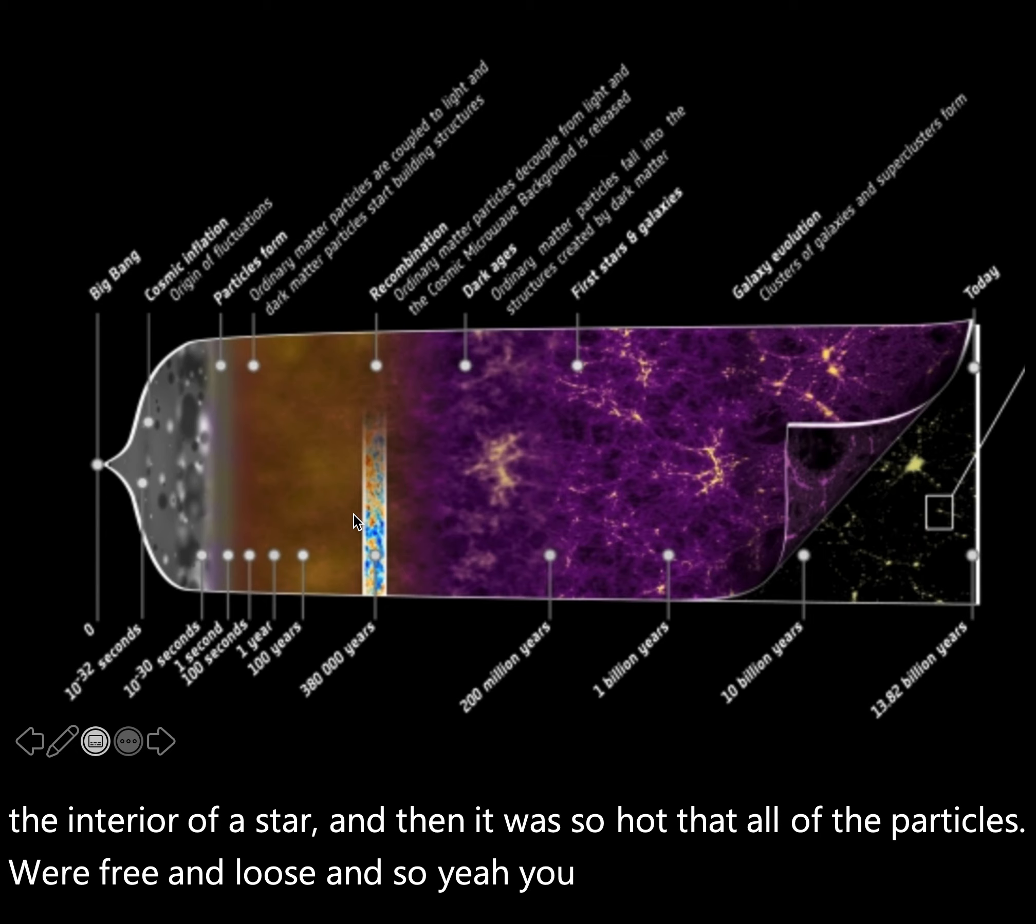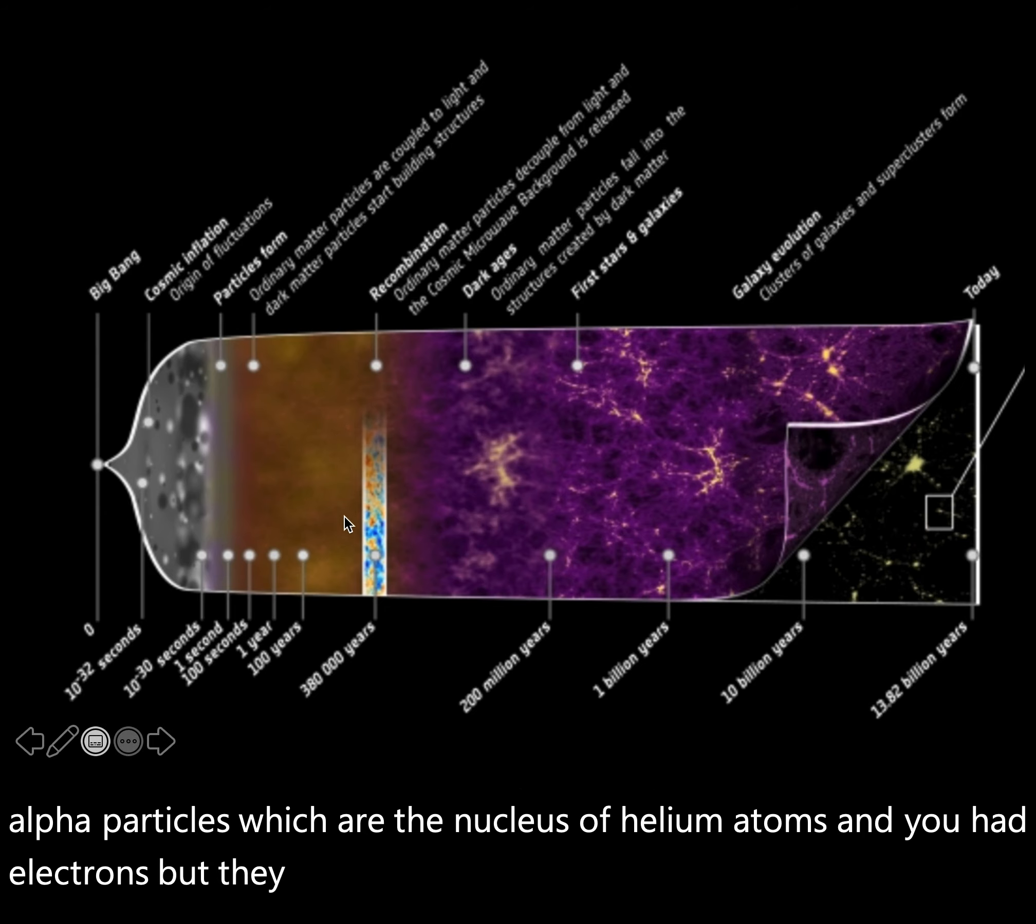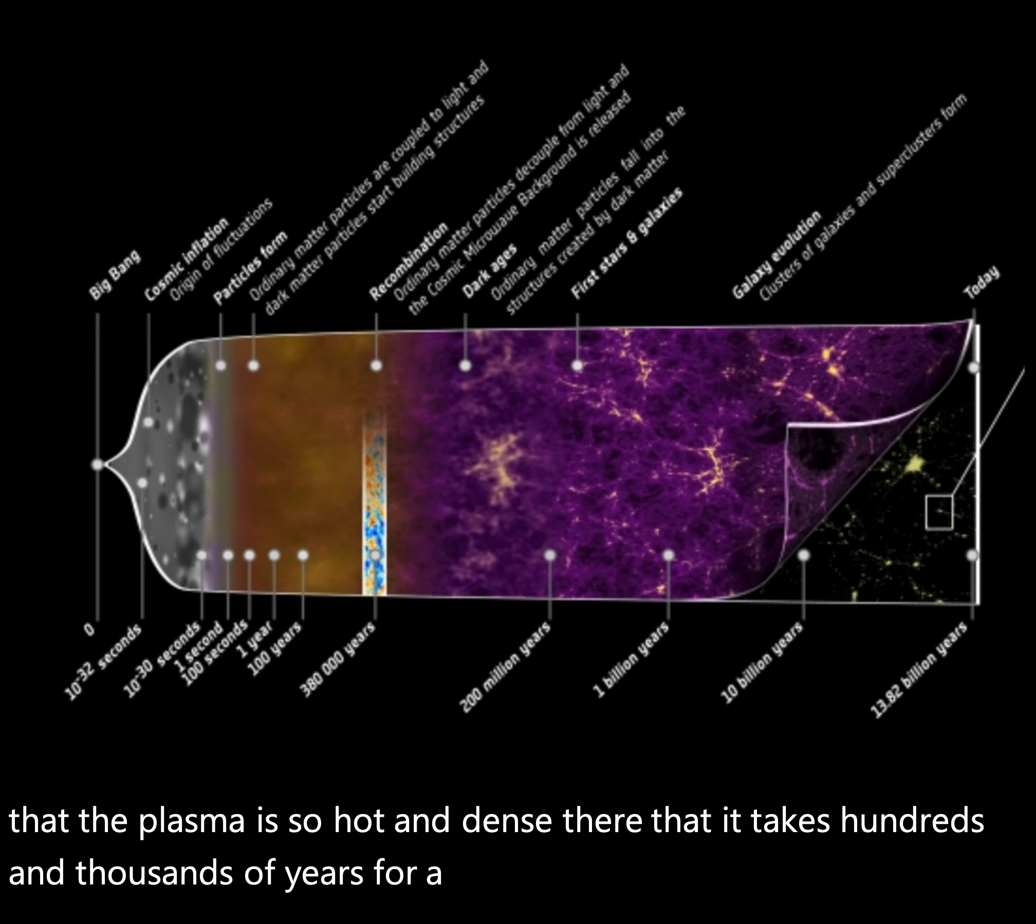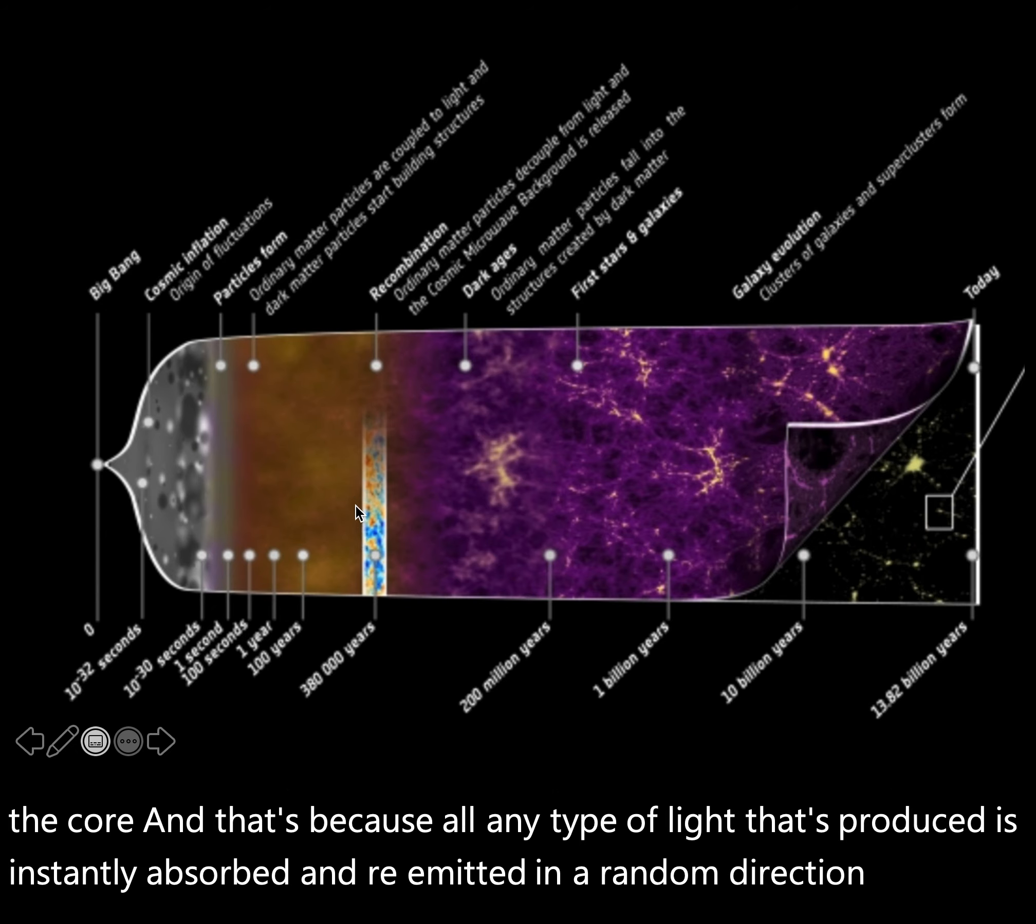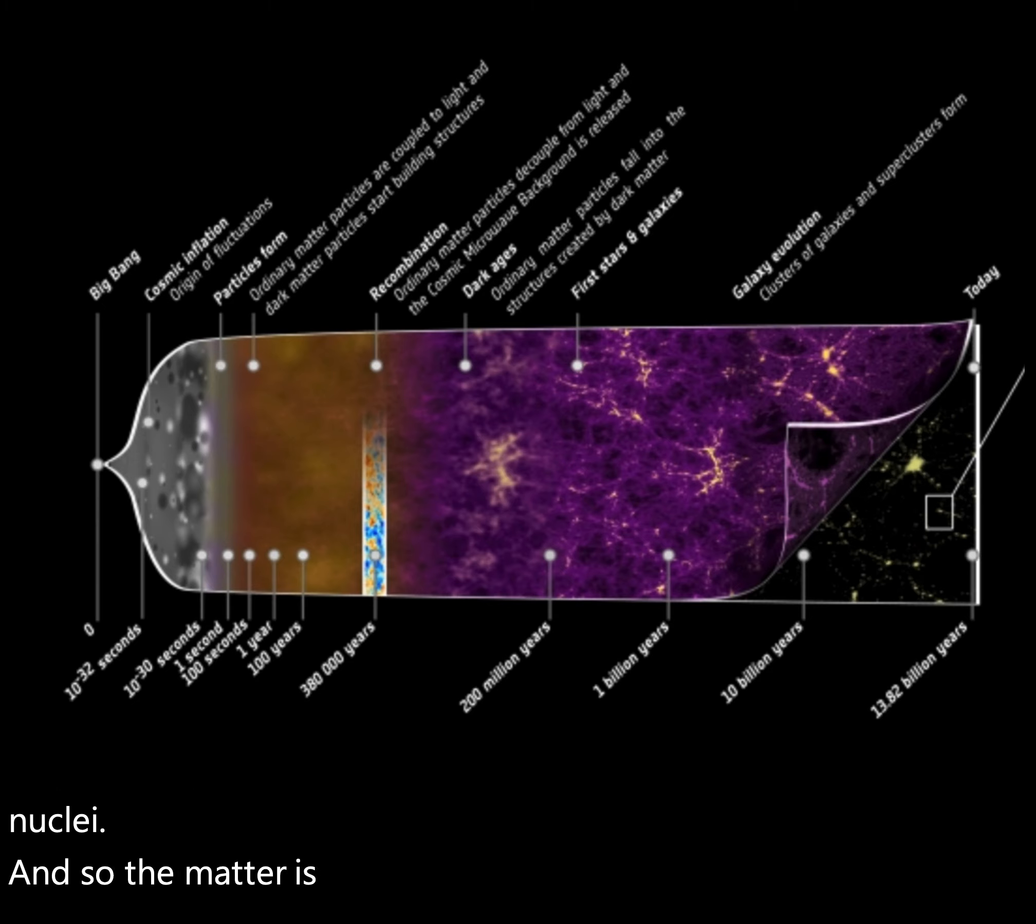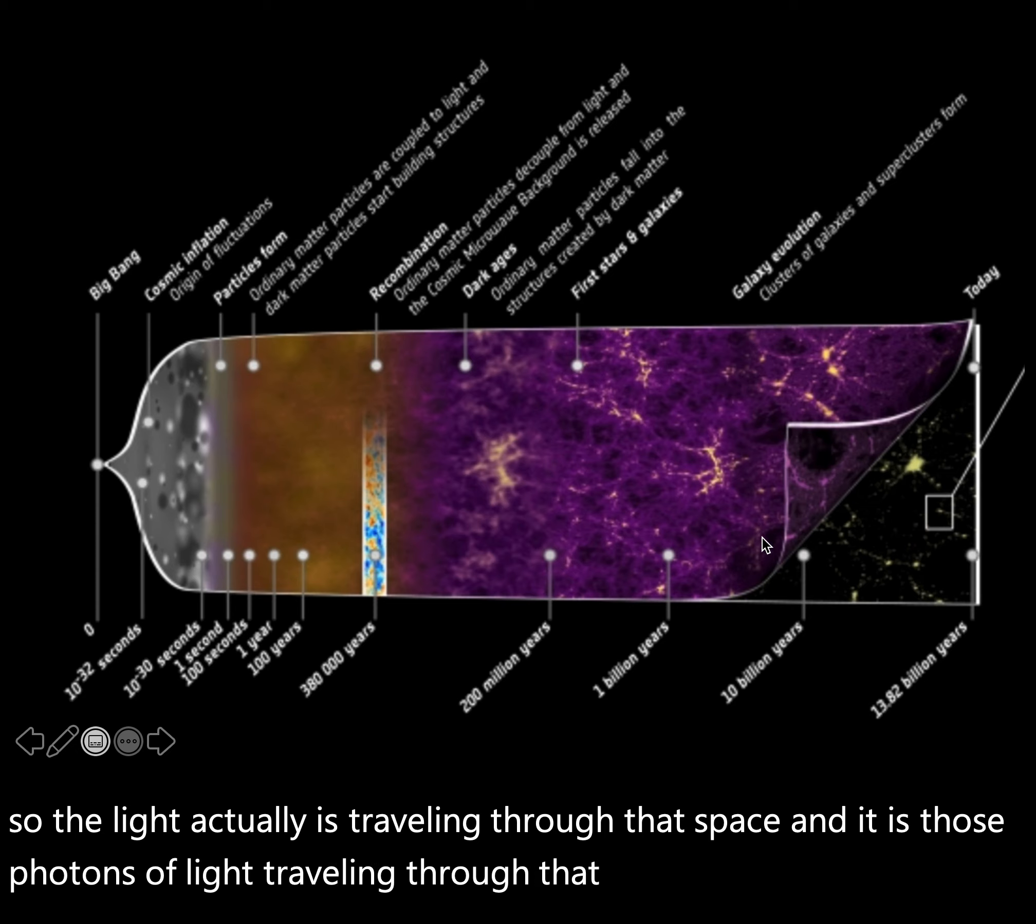So before 400,000 years after the Big Bang, before that period, basically the entire universe was like the interior of a star, and it was so hot that all of the particles were free and loose. You had protons, and you had alpha particles, which are the nucleus of helium atoms, and you had electrons, but they were flying free around. Just like when we talked about the fusion process in the core of the sun, the plasma is so hot and dense there that it takes hundreds and thousands of years for a single photon to work its way out of the core. Any type of light that's produced is instantly absorbed and re-emitted in a random direction by a charged particle it encounters.